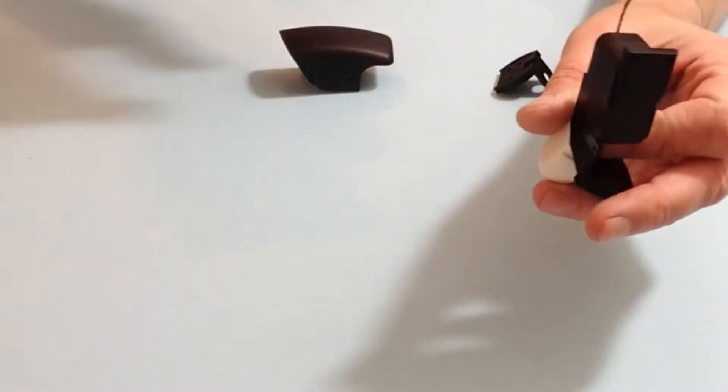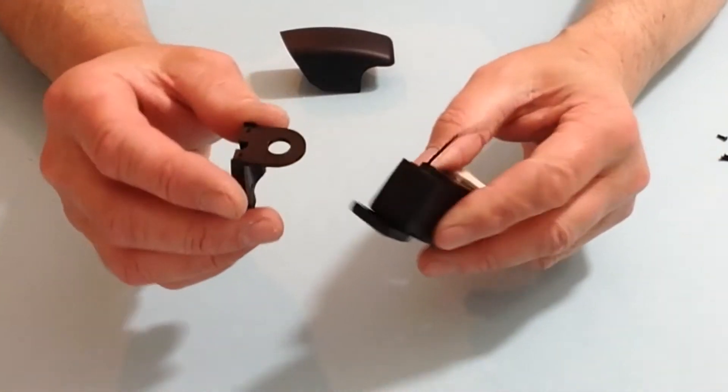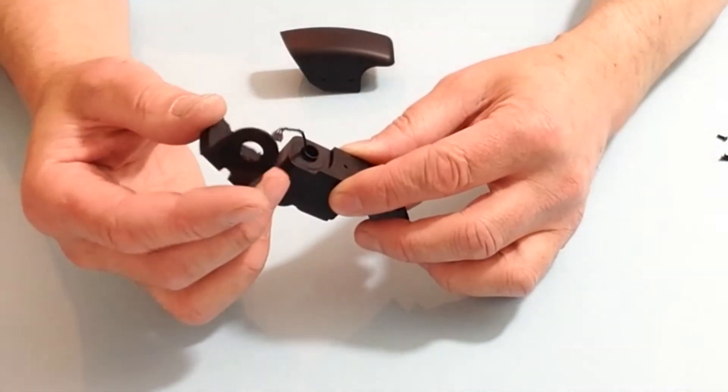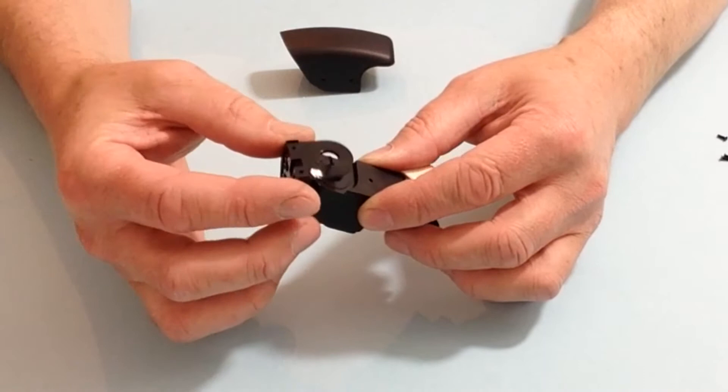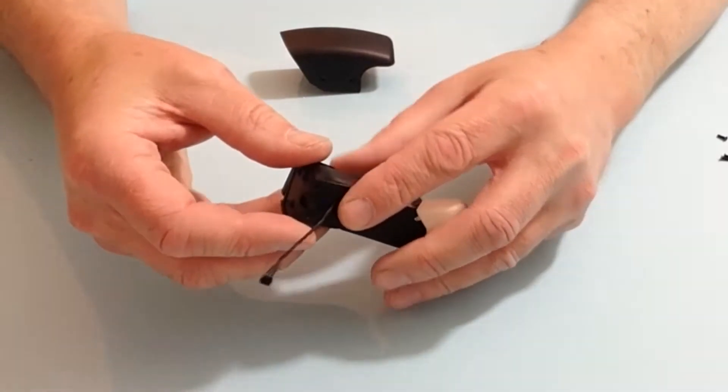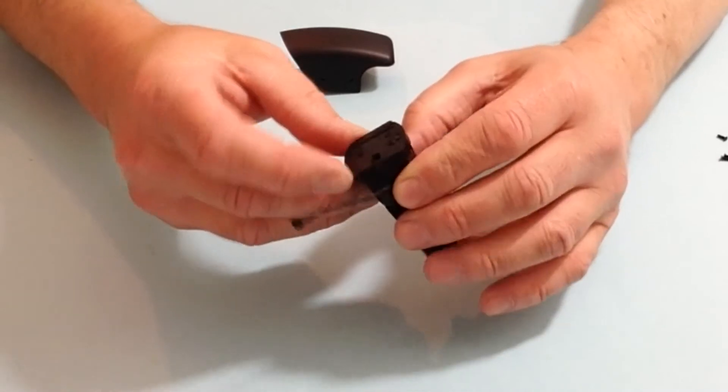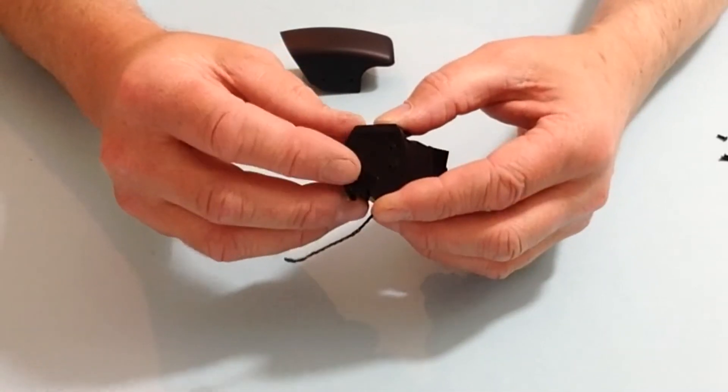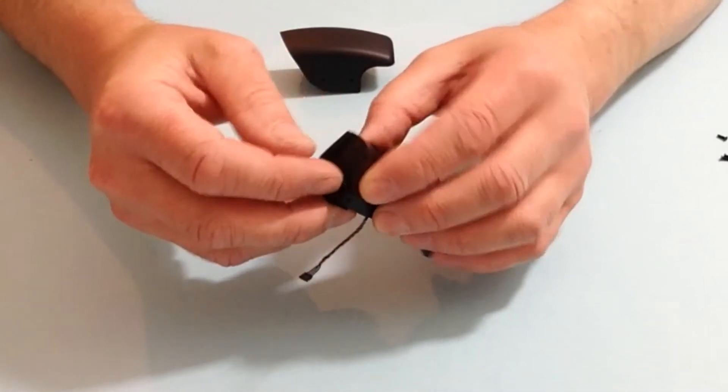Once you've done that, you then need to take the other part and place that over the cable fitting, fitting that down like so, and that should slot in and align in these positions.